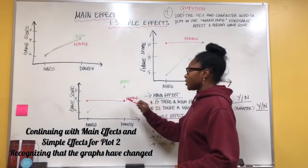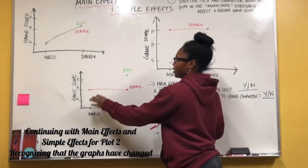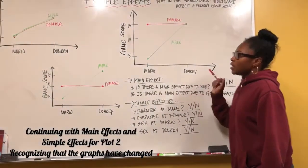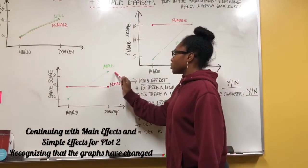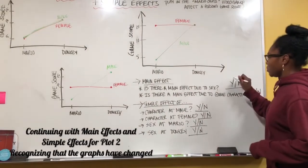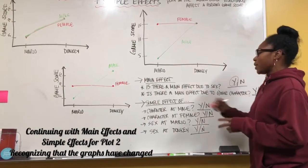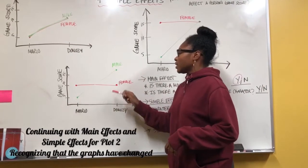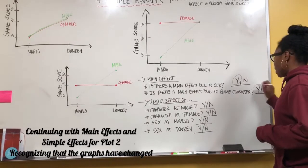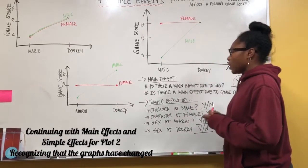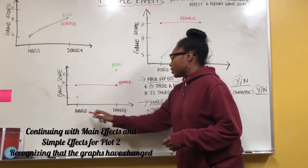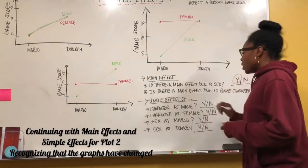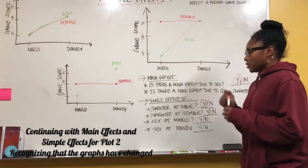Now we're going to move on to this second graph, which is very different — there's a change based on the character they used. Is there a main effect due to sex? Yes, because the male tends to score higher than the female. Is there a main effect due to game character? Yes, again, because the female line is stagnant compared to the male. For character at male, focusing only on males, the male tends to score higher with Donkey than with the Mario character. So we choose yes — there is a simple effect.